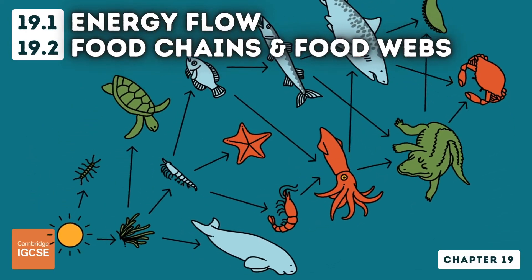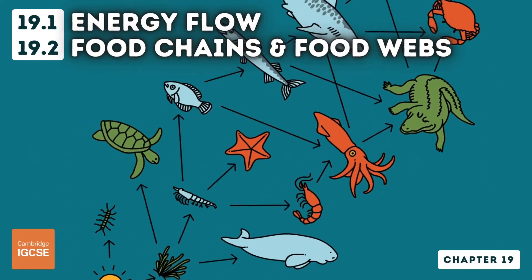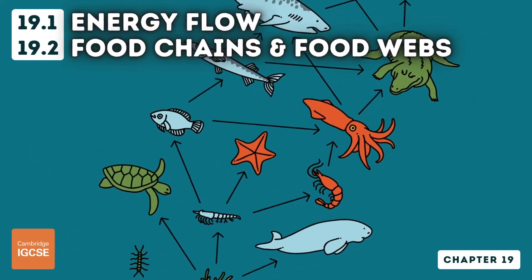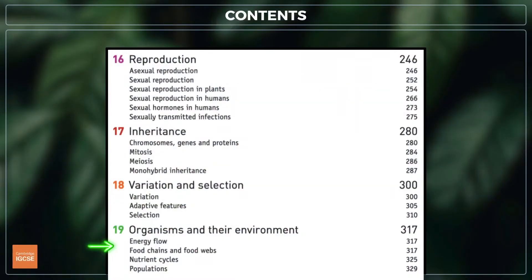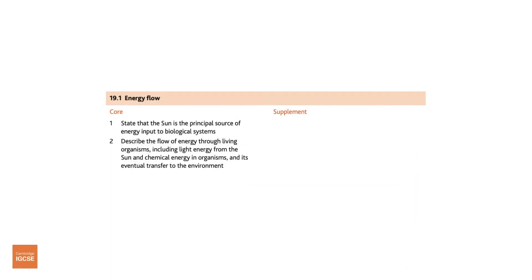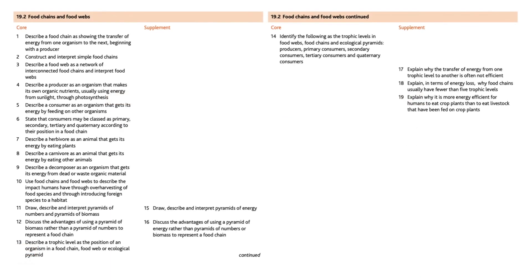Hello and welcome to another complete Cambridge IGCSE biology lesson, where you'll learn absolutely everything you need to know on topic 19.1, energy flow, and 19.2, food chains and food webs. As always, we'll be following the Cambridge syllabus exactly, and we'll cover absolutely everything you need to know for your final exam.